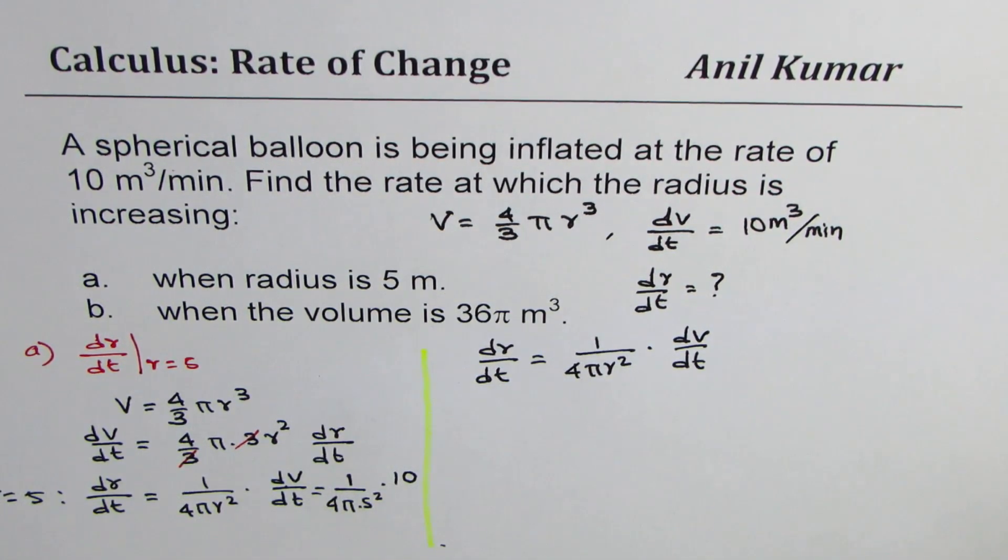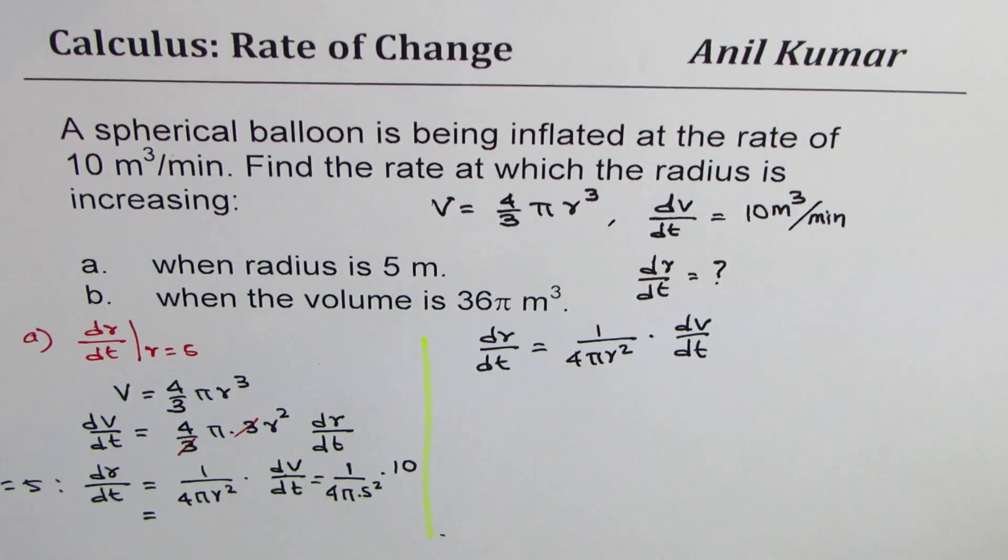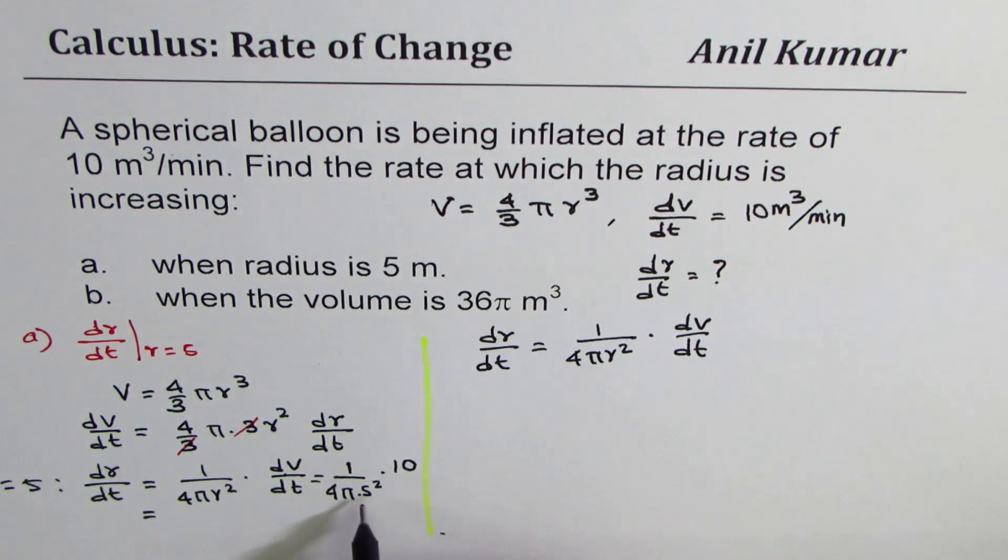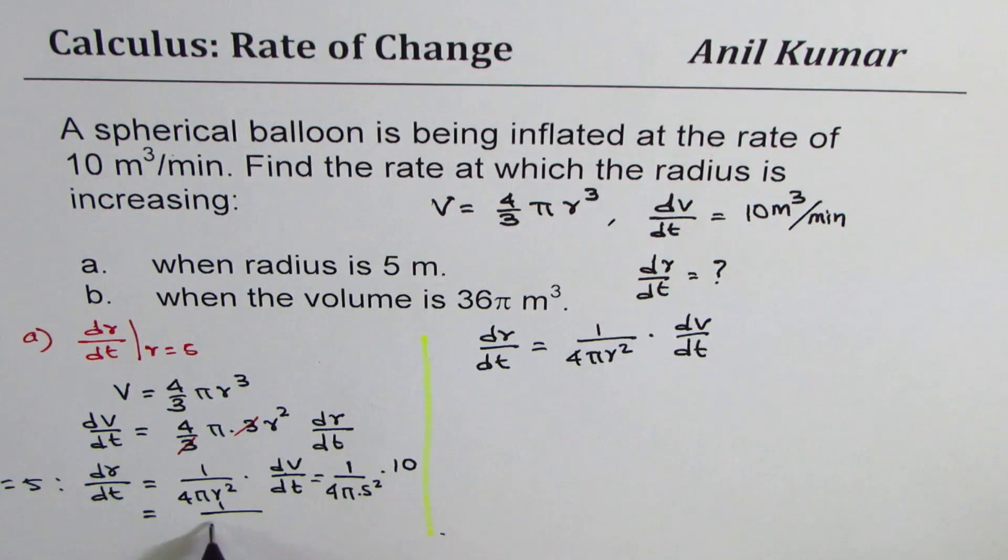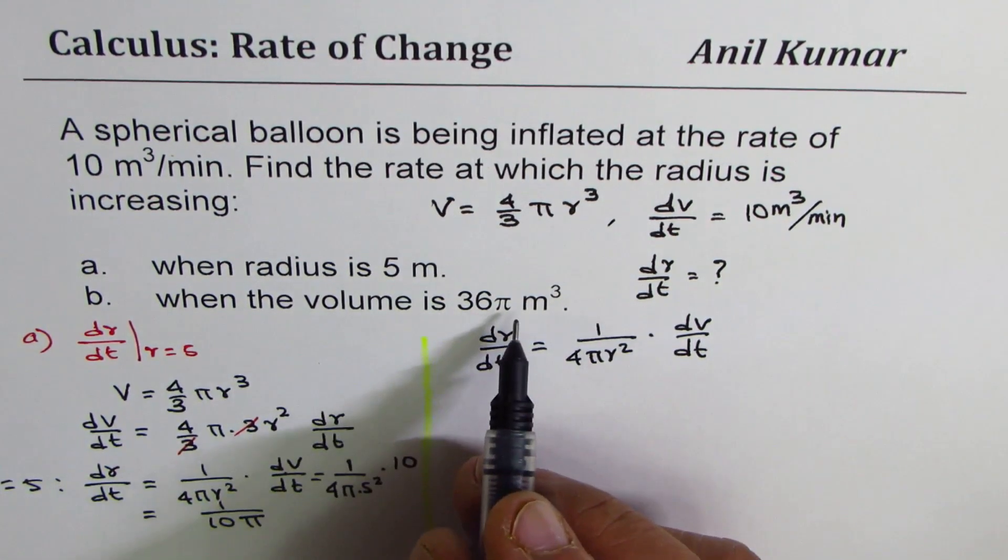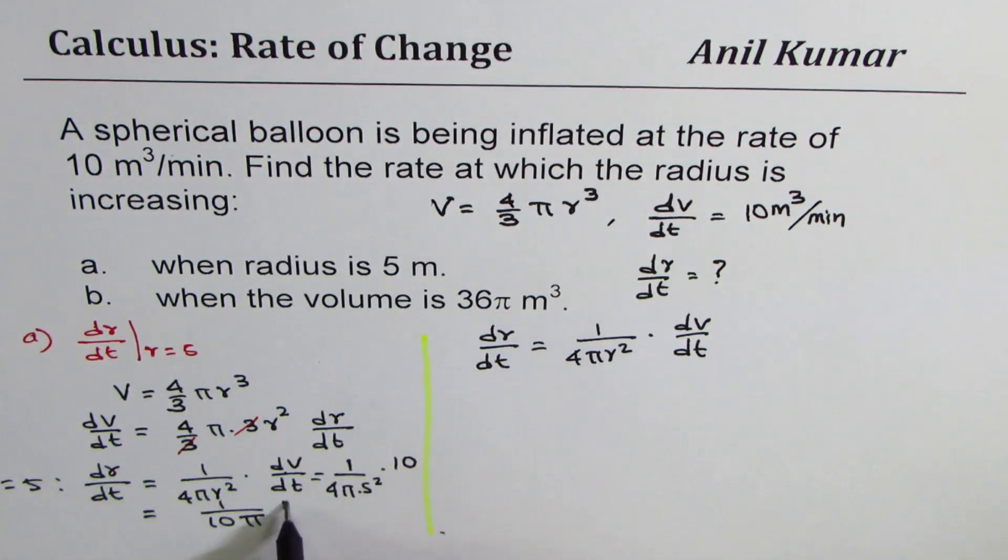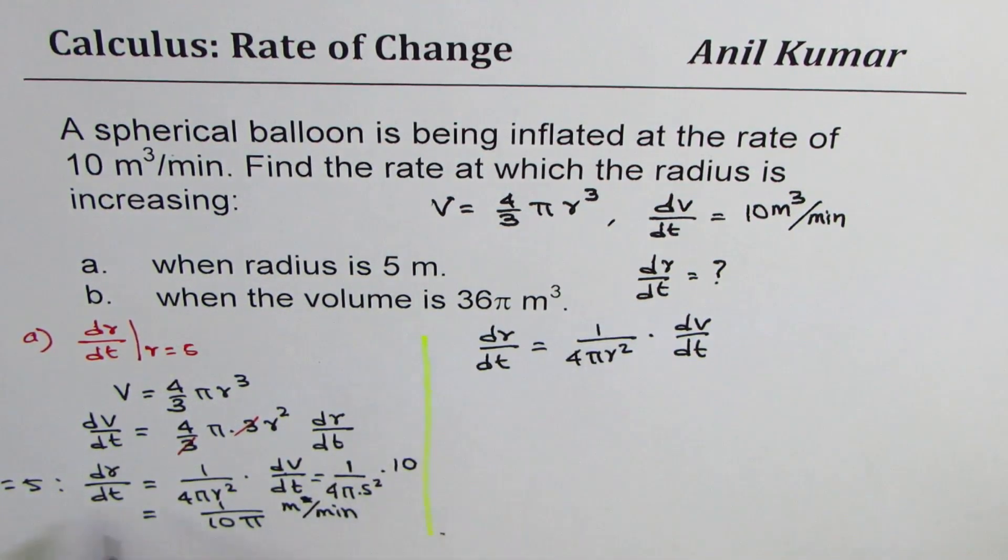Now you could simplify this. This is 25 and, let me just squeeze in the solution right there. I know we're running out of space here. Let me just push the page a bit. So 25 times 4 is 100. So we get this as equals to 1 over 10 pi. So we get 1 over 10 pi and the units will be meters per minute. That is for meters per minute since we are talking about the radius. So that is how you can do it.